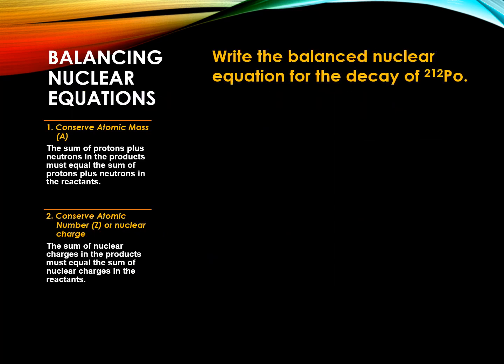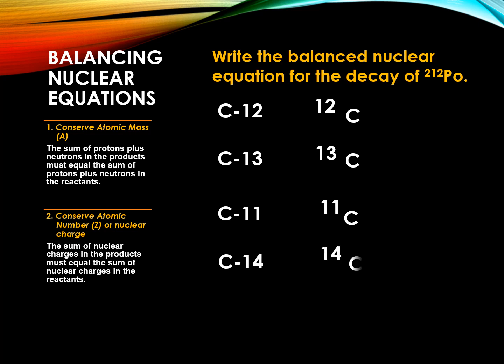Let's have a sample problem: write the balanced nuclear equation for the decay of polonium-212. When the problem only indicates PO-212, take note that since an element has a specific number of protons, we generally do not include the atomic number Z in the symbol. For example, carbon has four isotopes — carbon-12, carbon-13, carbon-11, and carbon-14 — with different atomic masses but all with the same atomic number Z equal to 6. In this course, we will maintain both the mass number and the atomic number in the symbol.